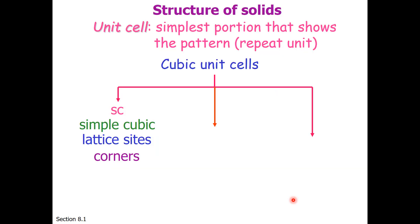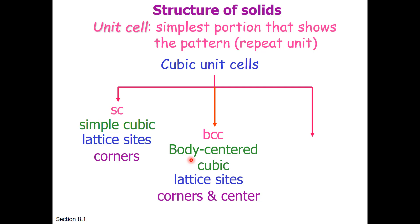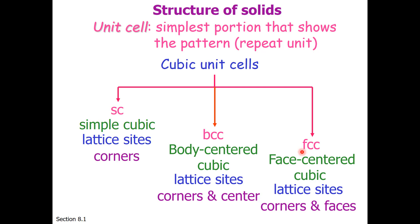Now that you know something about the sites within unit cells, let's talk about some well-known unit cells and their repeat patterns. The three types in our textbook are simple cubic, where the lattice sites are on the corners; body-centered cubic, where the lattice sites are corners and center; and face-centered cubic, where the lattice sites are the corners and the faces.